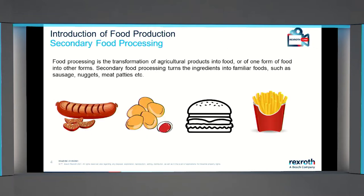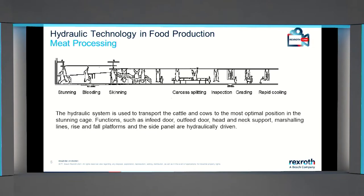Secondary food processing is a transformation of agricultural products into finished products — for example, sausage, nuggets, meat patties, and so on.